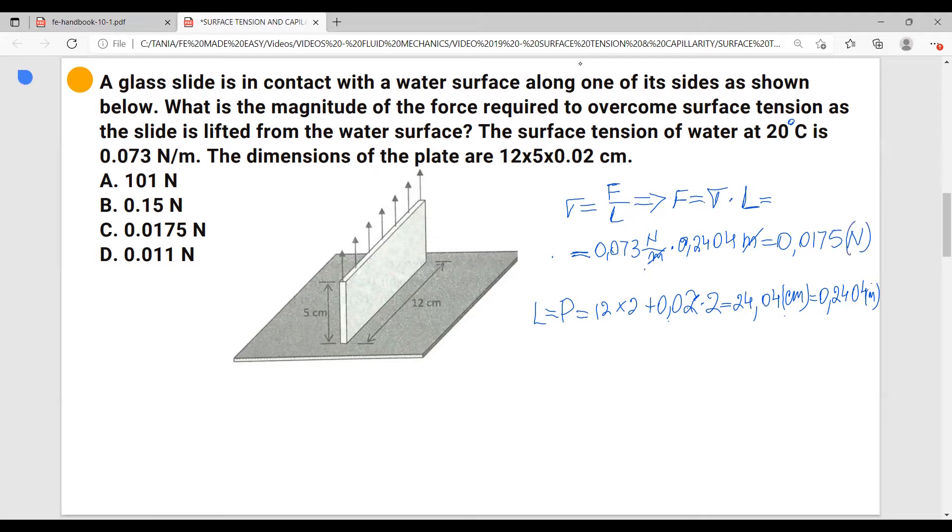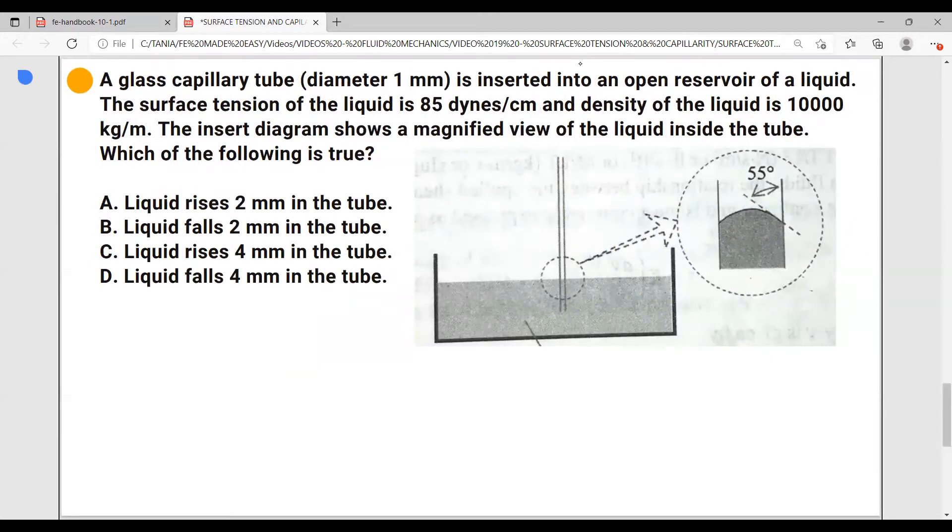Let's move forward with another problem. A glass capillary tube, diameter 1 millimeter, is inserted into an open reservoir of a liquid. The surface tension of the liquid is 85 dynes per centimeter, and density of the liquid is 10,000 kilograms per meter cubed. The insert diagram shows a magnified view of the liquid inside the tube. Which of the following is true? Liquid rises 2 millimeters in the tube, falls 2 millimeters, or rises 4 millimeters, or falls 4 millimeters?